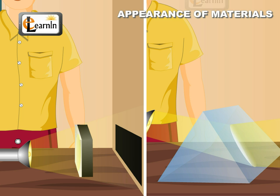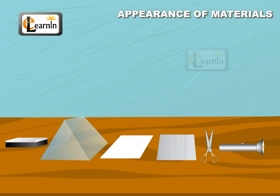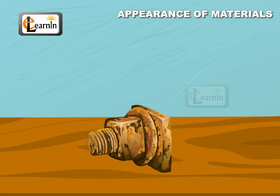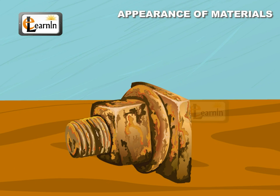Now flash the torchlight on the duster and the glass prism. We can see that there is a shadow of the duster formed behind it, but light will pass through the glass prism. This is because some objects like metals have lustre in them which makes them shine. Some metals like iron can rust and lose their lustre when they are exposed to open air and moisture.